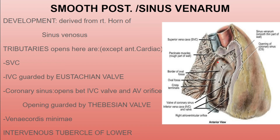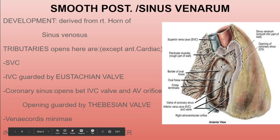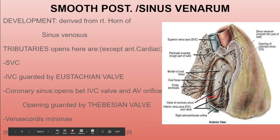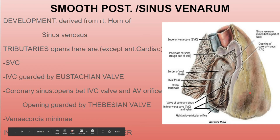The intervenous tubercle of Lower is a small projection scarcely visible on the posterior wall of the right atrium, just below the opening of the superior vena cava. During embryonic life, this tubercle directs superior vena cava blood towards the right ventricle, while the eustachian valve directs inferior vena cava blood from the right atrium to the left atrium.